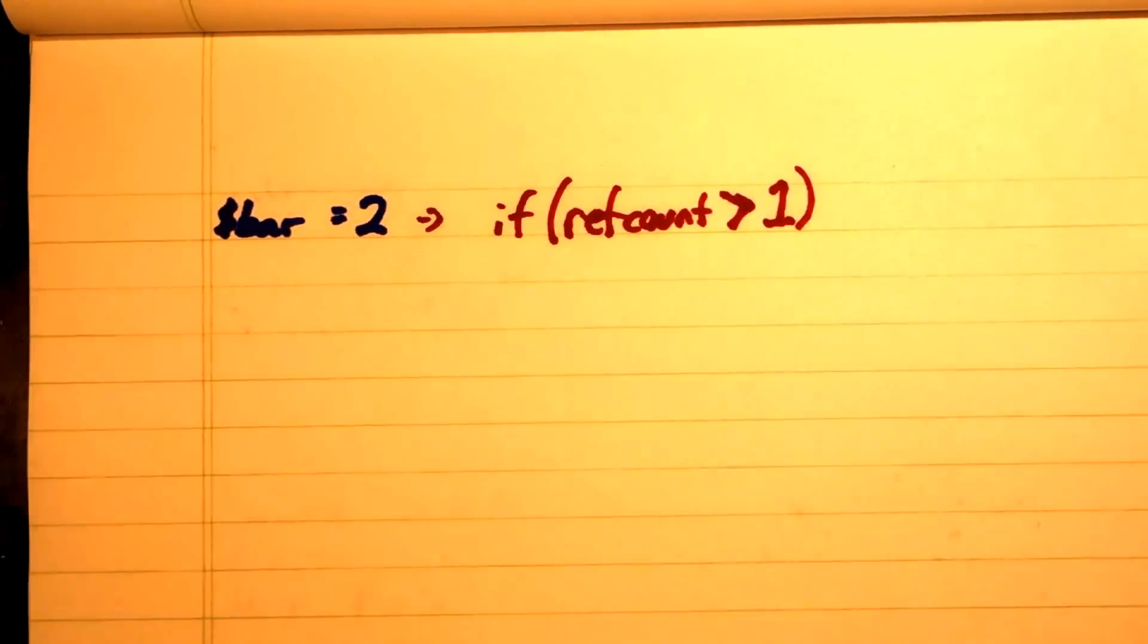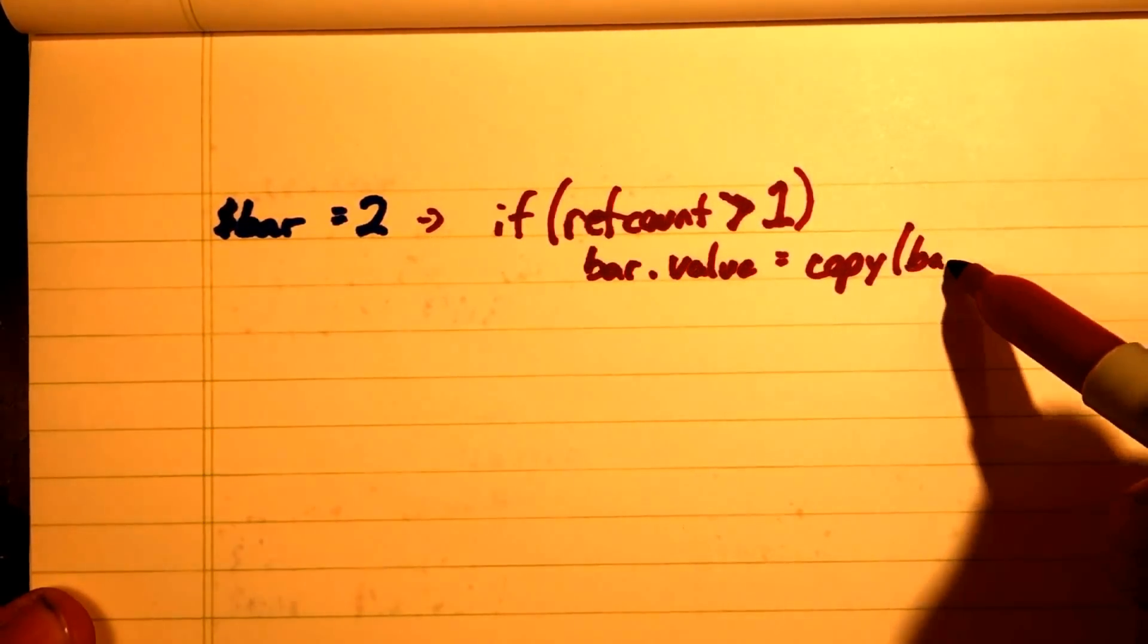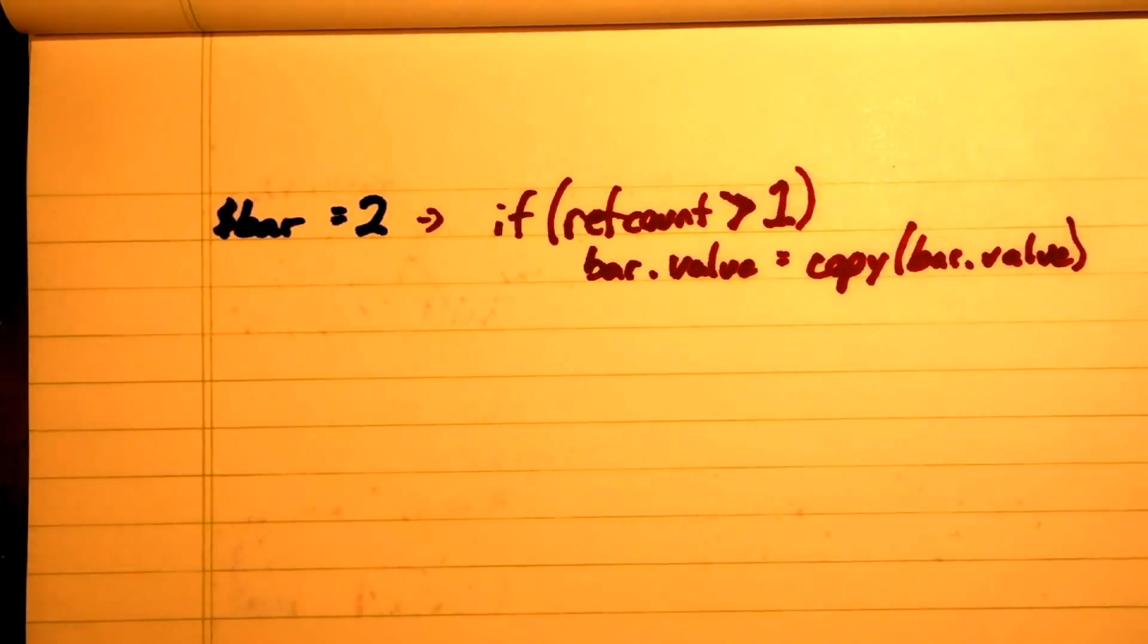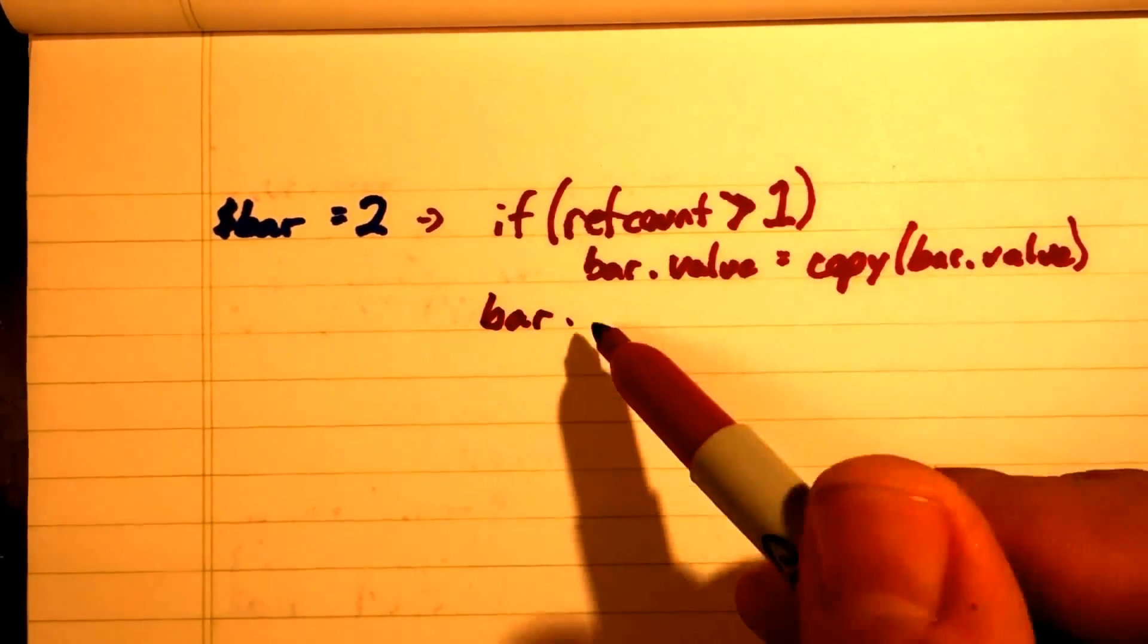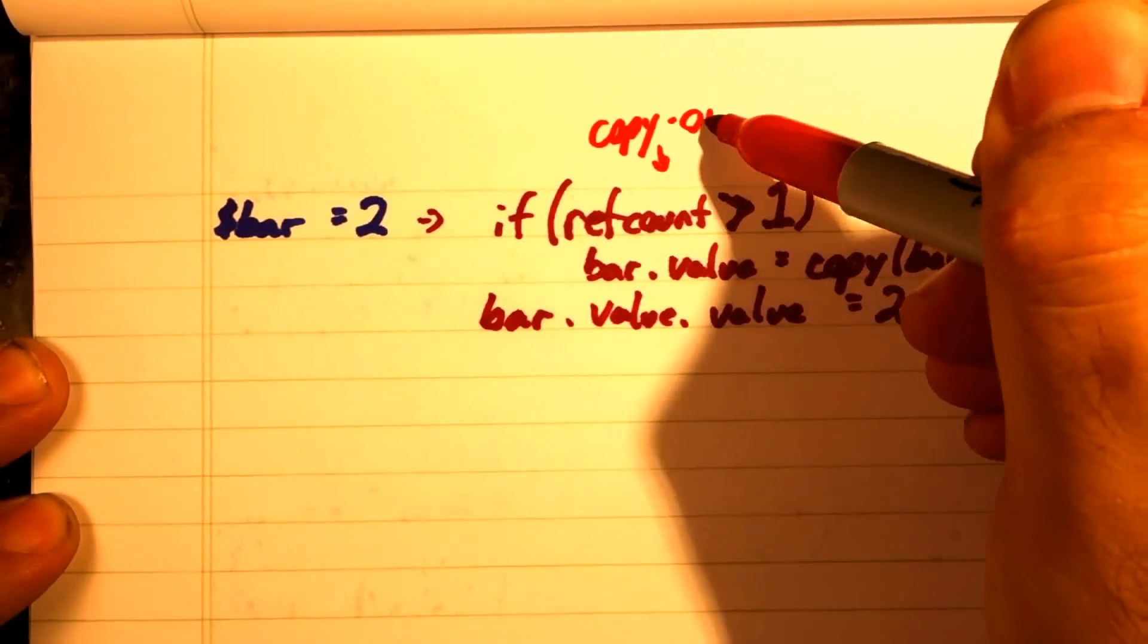So, when we are editing a value, if the ref count is one, we can directly edit the value. If the ref count is greater than one, we need to copy that value first. And then we can edit the copy. This is also known as copy on write.